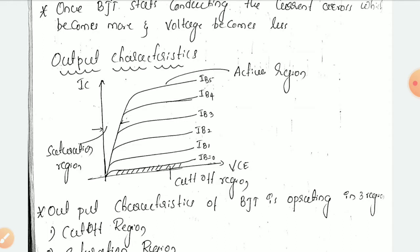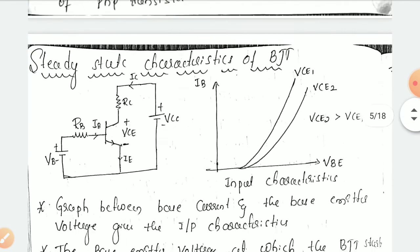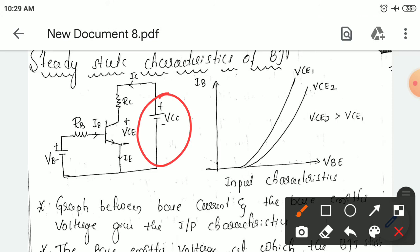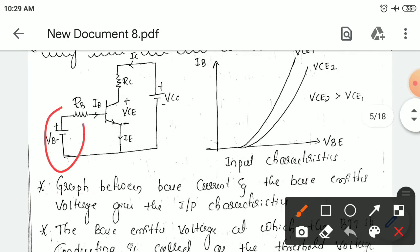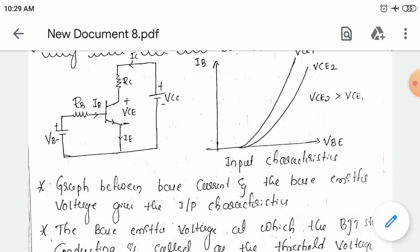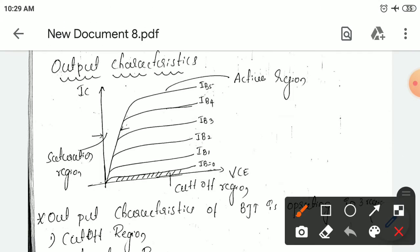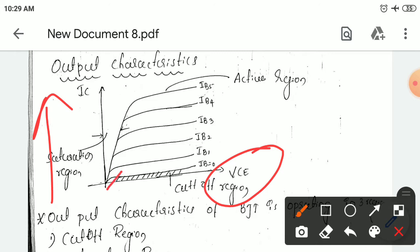That is called as output characteristics. If you keep the base voltage constant and vary VCE, then you can draw the output characteristics. Keeping VB constant and varying VCE, IC also varies. Initially the characteristics of this is similar to that of the MOSFET: initially the current rises linearly, then it saturates. For different base currents — we have plotted for five base current values — we have plotted IC here.